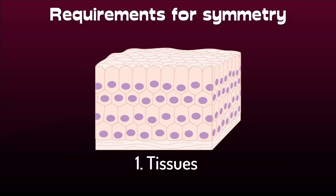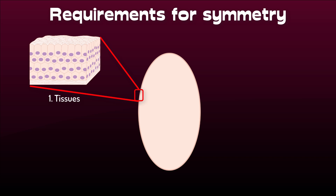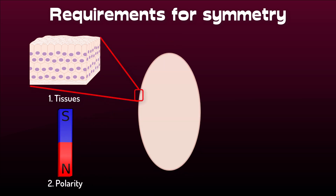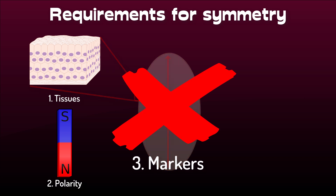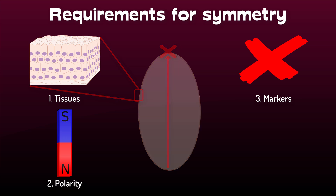First of all, you need cells to stick together in distinct tissues. Secondly, for any kind of symmetry you'd need a way to define sides — like how a magnet has a positive and a negative pole — so some kind of polarity, giving an axis. And thirdly, once a polarity has been established, you'd want some kind of markers to indicate what organs are to appear where. And this automatically opens up for repetition.